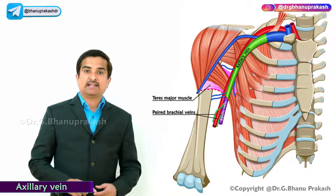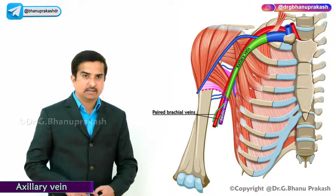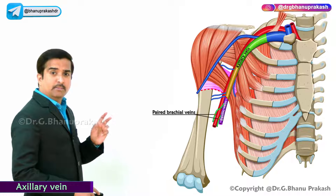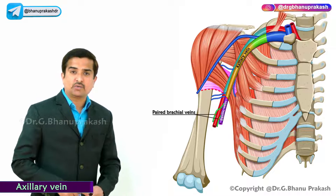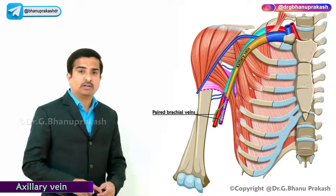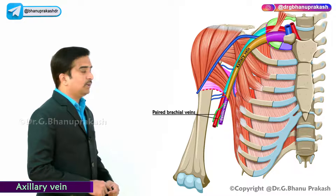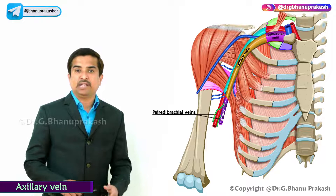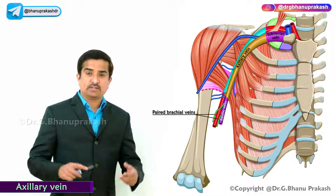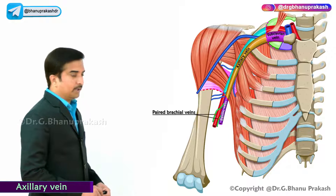Once formed at the lower border of the teres major muscle, the axillary vein runs upwards along the medial side of the axillary artery and ends at the outer border of the first rib, where it becomes the subclavian vein.